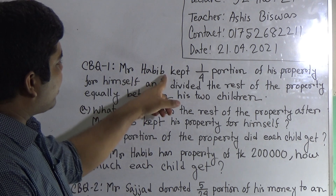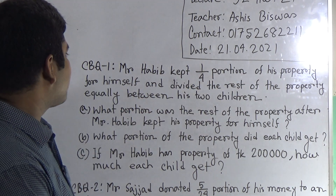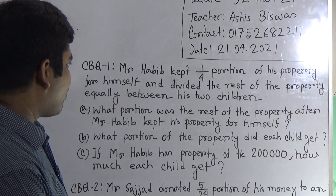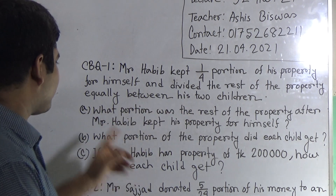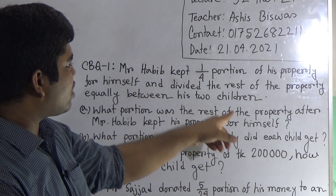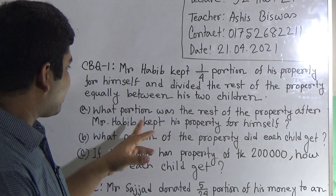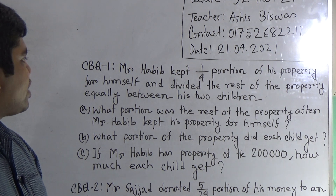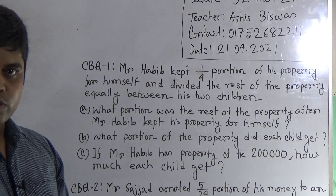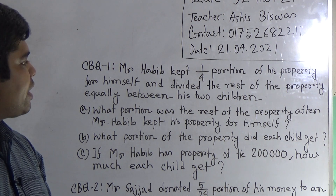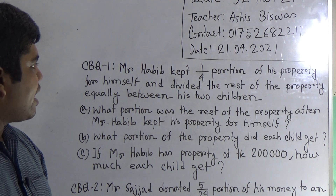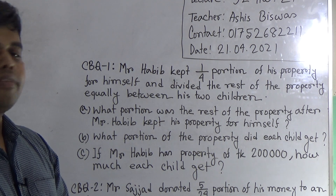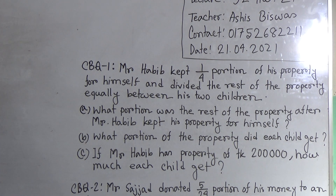Question C: if Mr. Habib has property of two lakh taka, how much does each child get? Now we solve Question A first. Mr. Habib kept one by four portion of his property for himself. In this case, we first consider the total property is one portion. After that, we subtract his portion — that means one by four portion — from the total one portion, and we get the rest of the property.